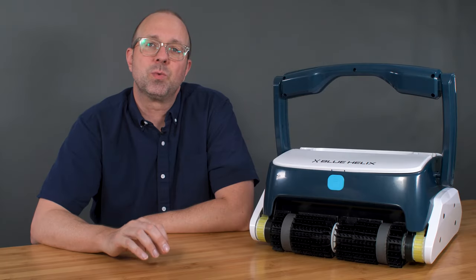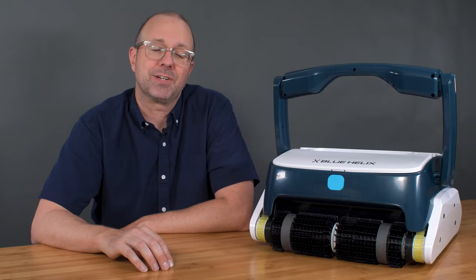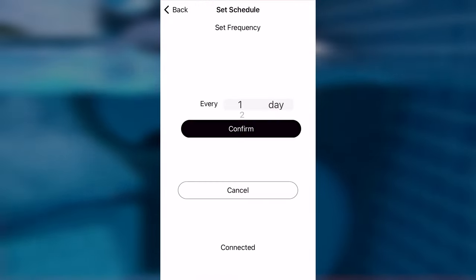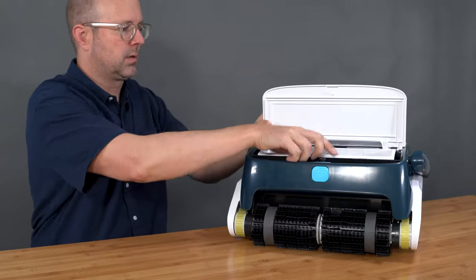The Blue Helix One is simply one of the best value robots I have ever tested. With waterline cleaning, smartphone app, weekly timer, three motors, and dual filter baskets, it has everything you need in a pool robot at a more affordable price.